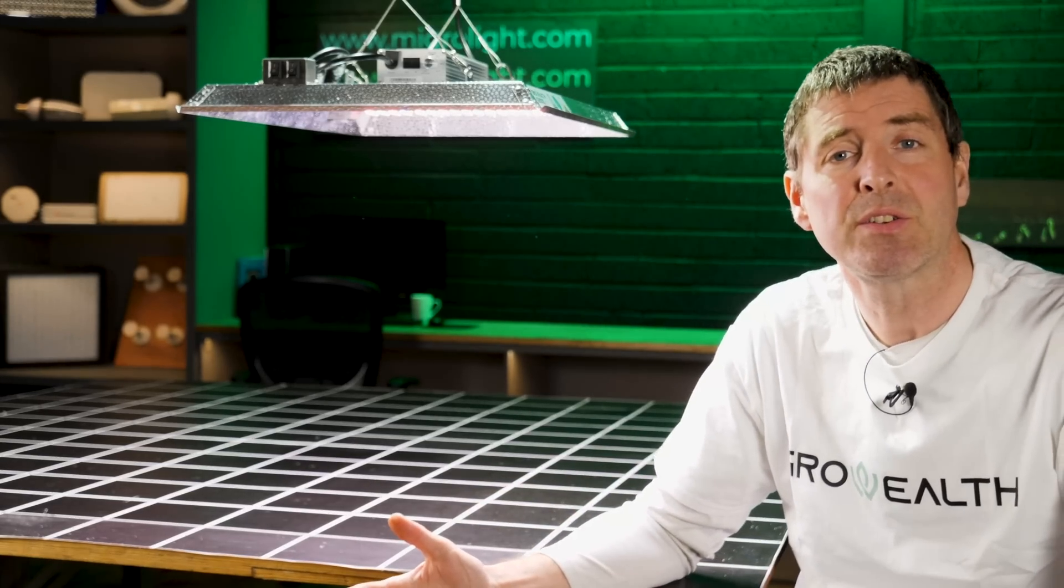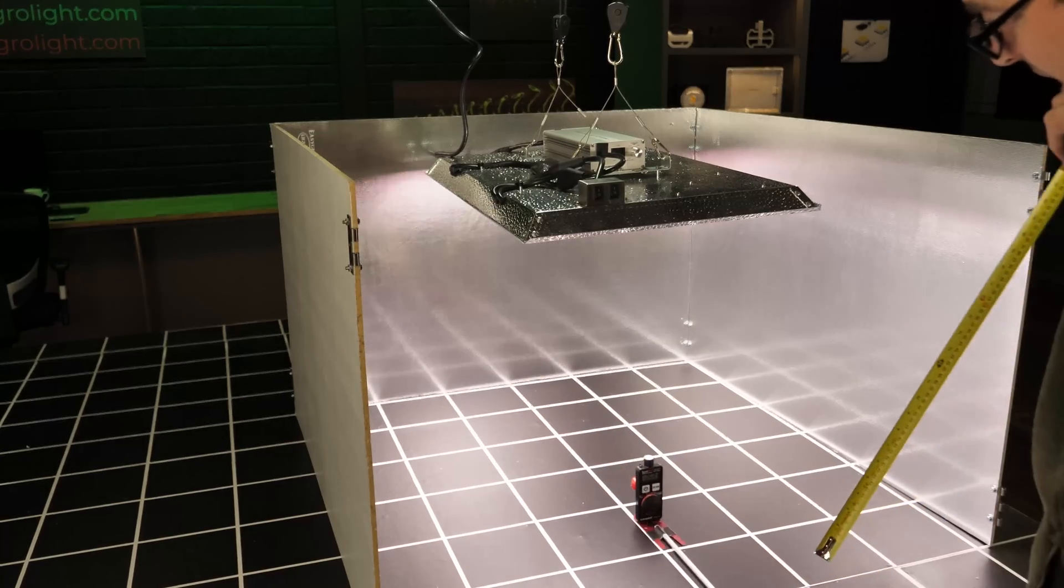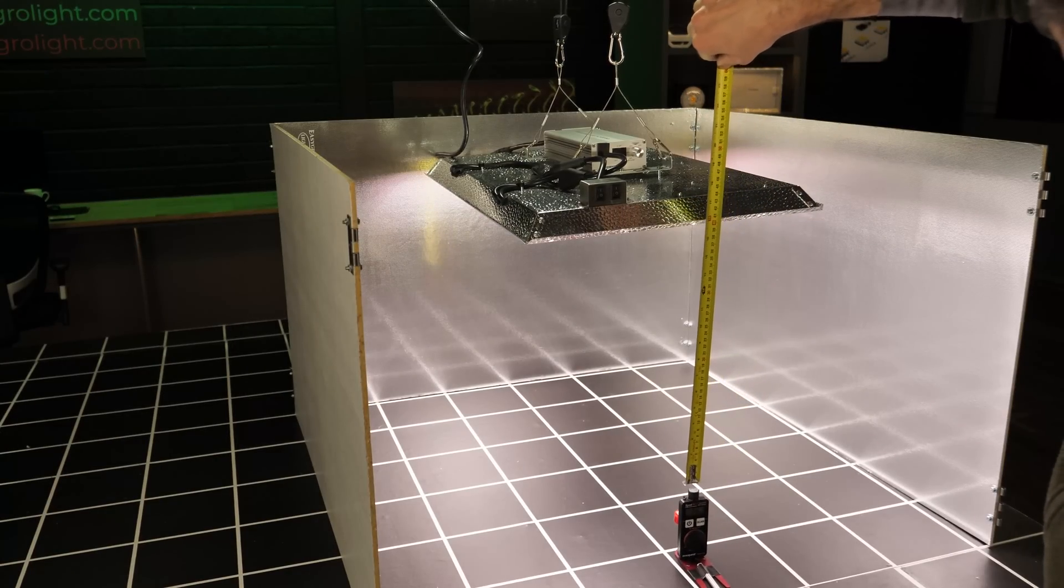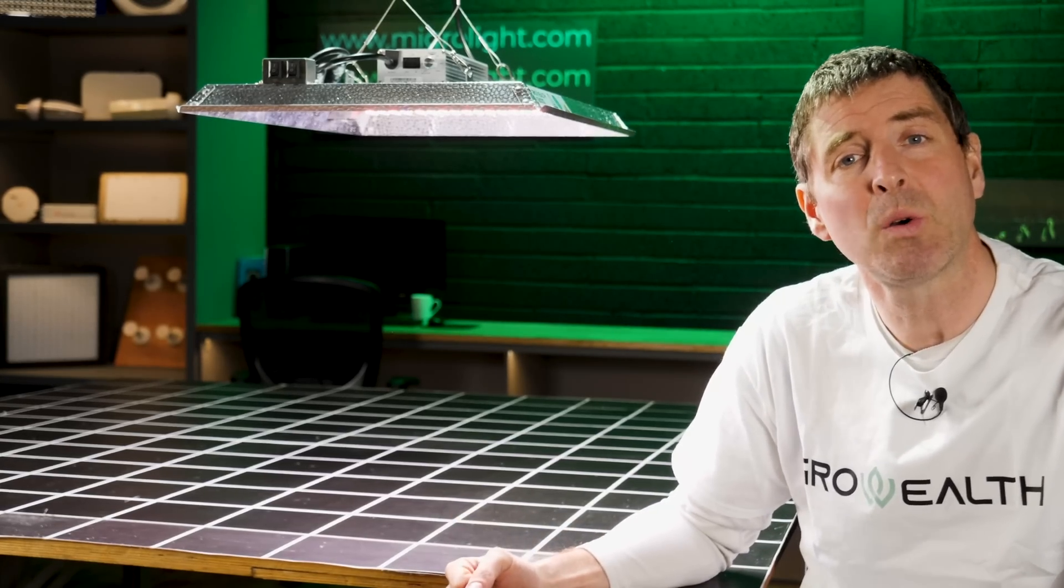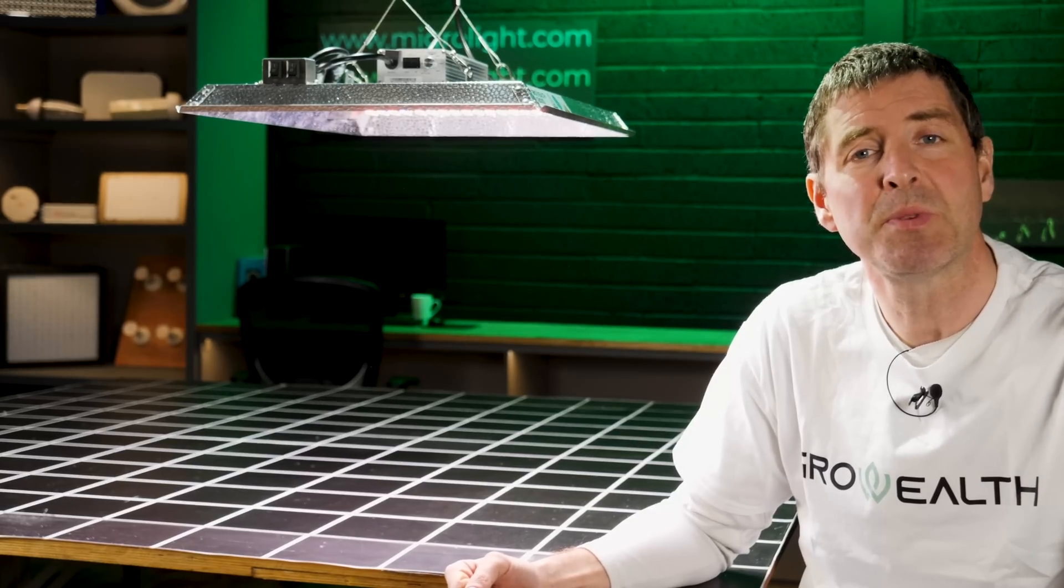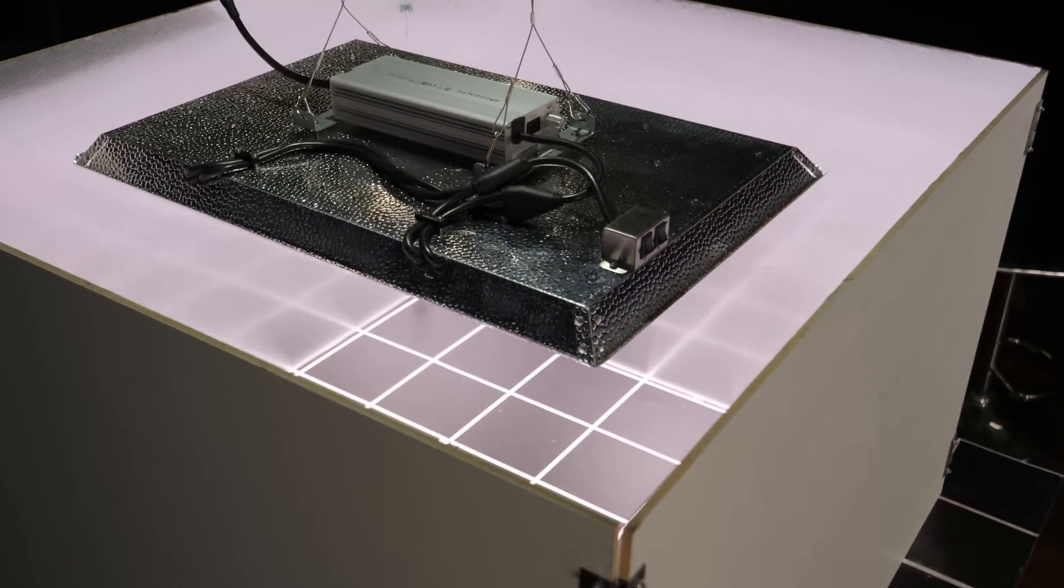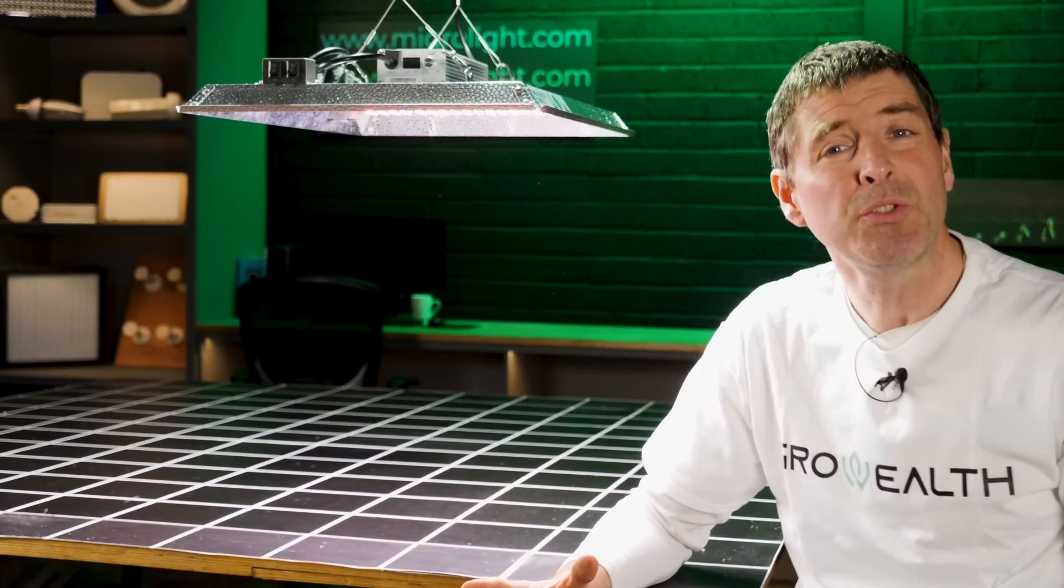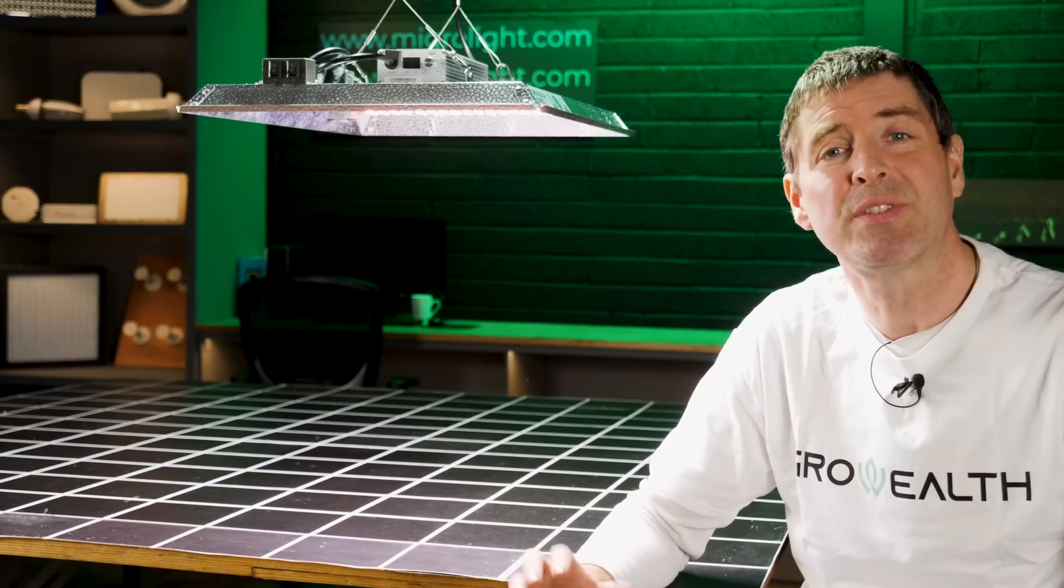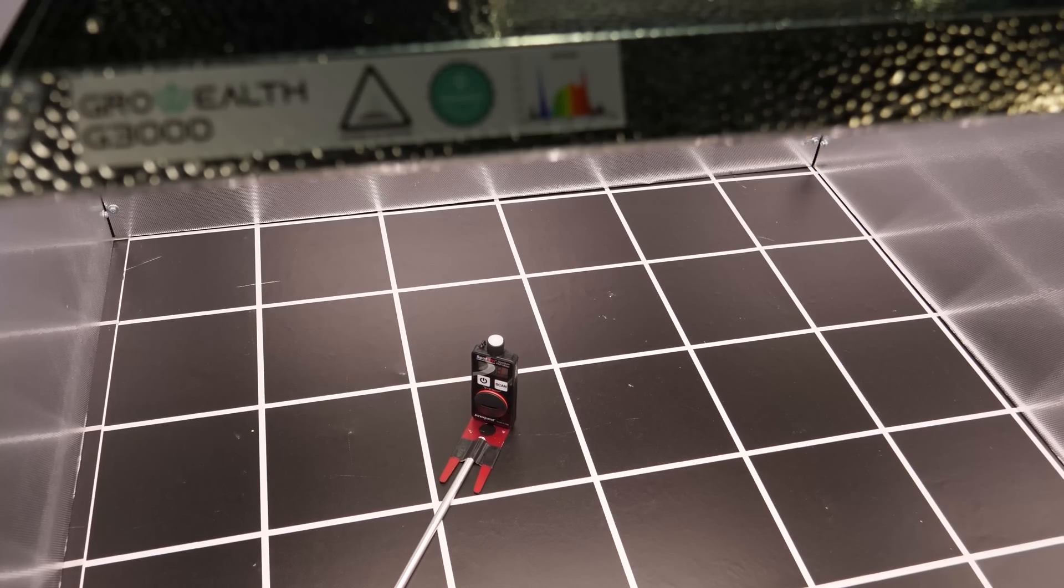And I found that height to be the same as specified by the manufacturer, so 16 inches or 40 centimeters hanging height. And I got our Apogee quantum sensor and took measurements in a grid, six rows by six columns. So 36 PAR measurements to generate a PAR map. This PAR map shows us the total PAR output over its designated grow area and accounts for the whole system efficiency.